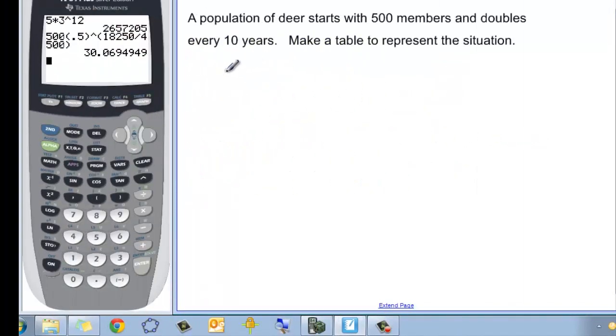One more example. A population starts with 500 members and doubles every 10 years. And we want to make a table. So we have years, and we have the population of deer. In the first year, or zero year, when we started, there were 500 deer. And it takes 10 years to double. So in 10, we're going to have 1,000. And in 20 years, we're going to have 2,000. And in 30 years, we'd have 4,000. And that should be enough for us to see the pattern.